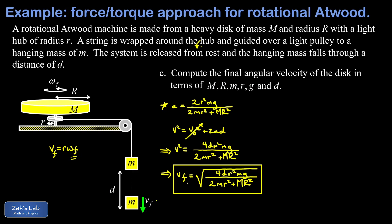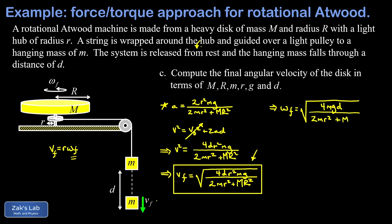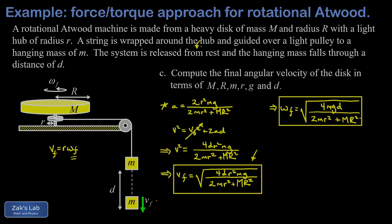Taking the square root gives the final speed of the hanging mass. The final angular velocity omega is this speed divided by little r, which is equivalent to dividing the inside of the square root by r squared — the r squared terms vanish. Rearranging, omega final equals the square root of 4mgd divided by two little m little r squared plus big M big R squared. The mgd term resembles a potential energy term, matching the energy conservation solution. I'll post a link to the energy conservation approach on the end screen.